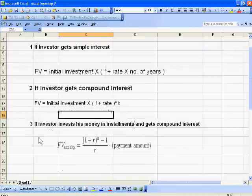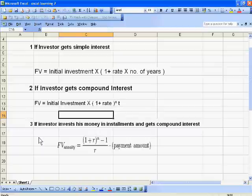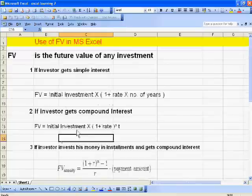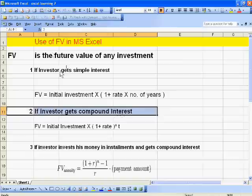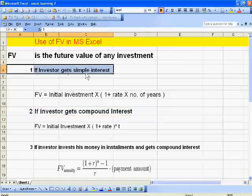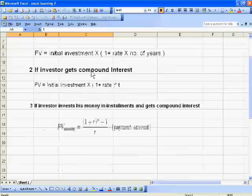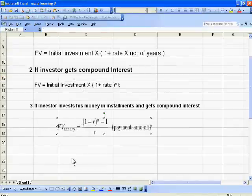If investor invests his money in installments and gets compound interest, at that time FV equals payment amount times (1 plus r) to the power t minus 1, divided by rate of interest r. Now we will calculate this second type with the Excel formula.